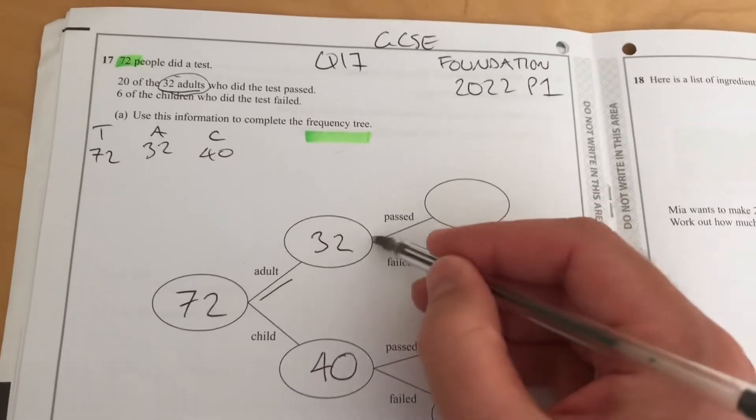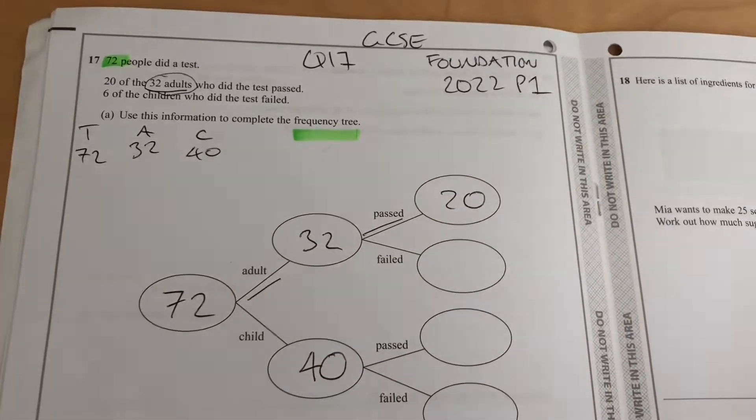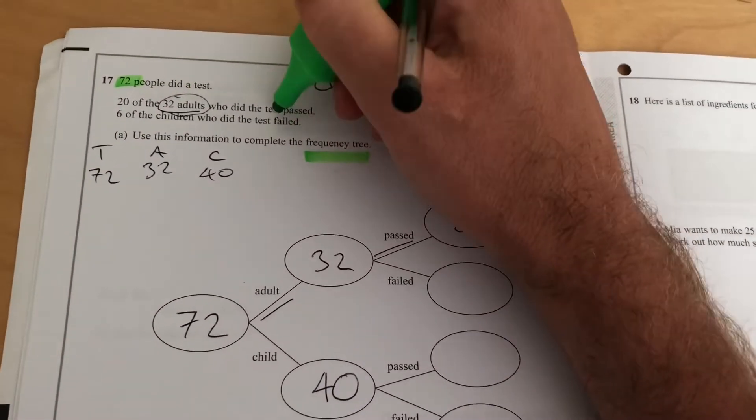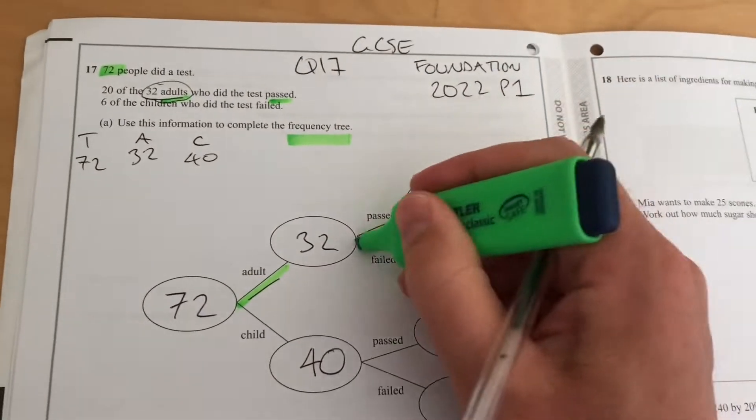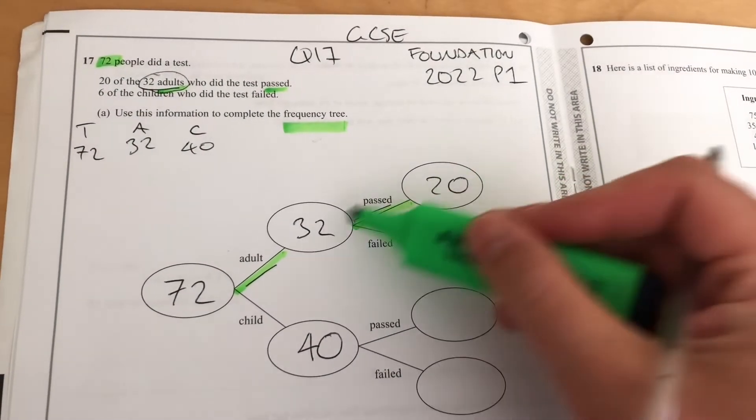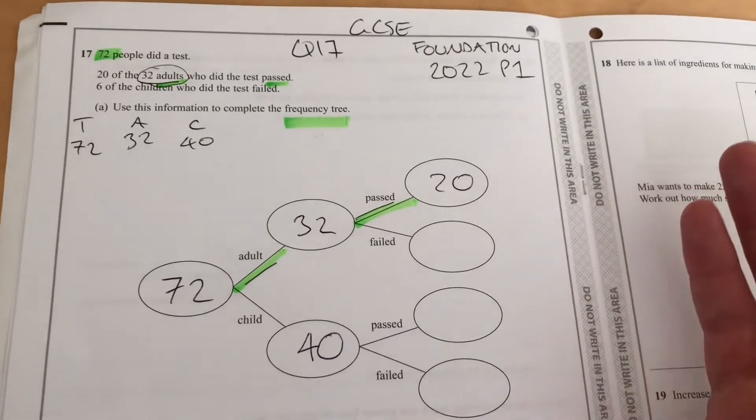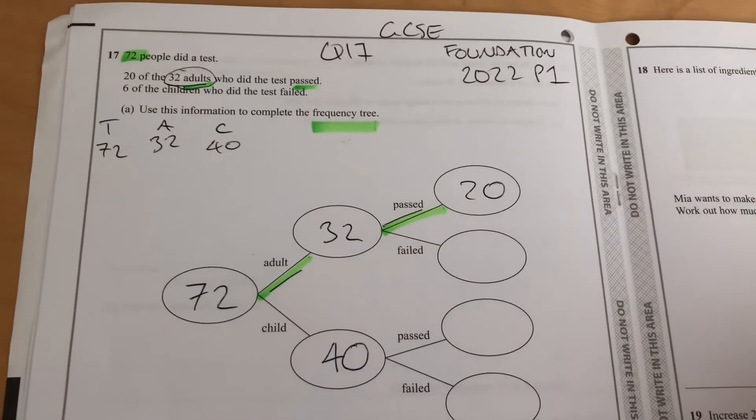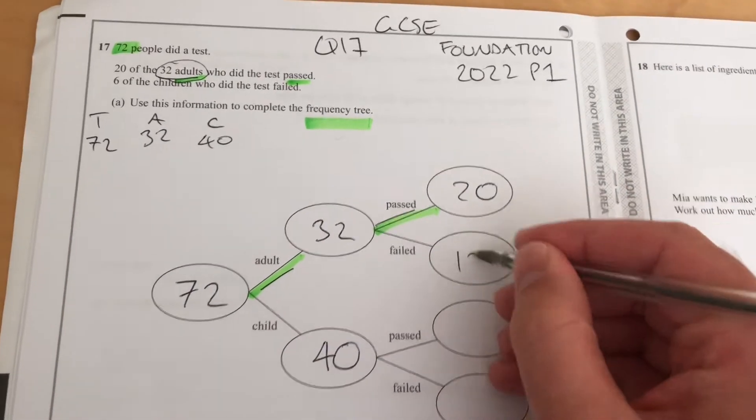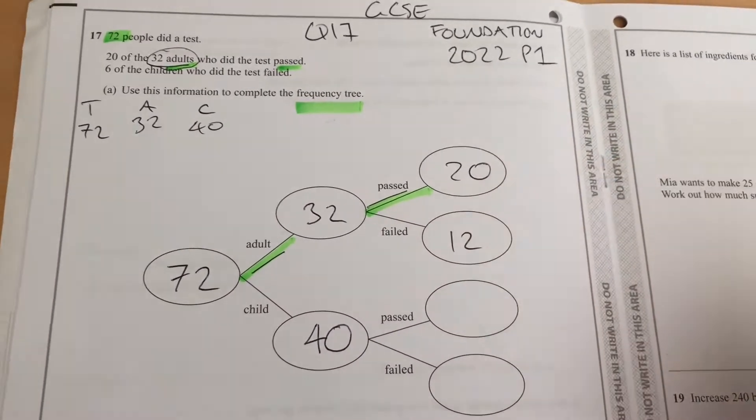20 of the 32 adults passed, so adults passed, we put the 20 there. Going from that information, adults who passed—there's the 20 and there's the 32. Now we can fill this one in, because you either pass or fail; there isn't a third option. That'll be 12 there, because 20 and 12 adds up to 32.